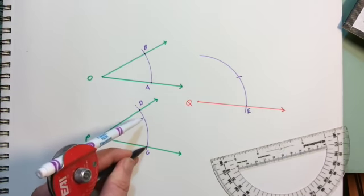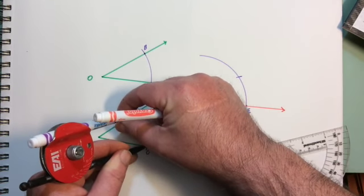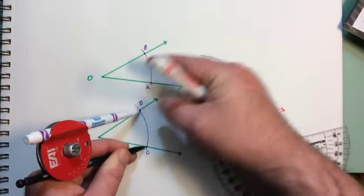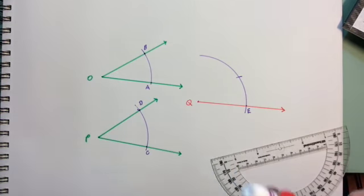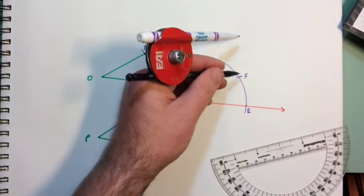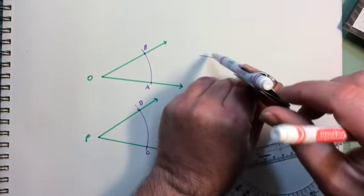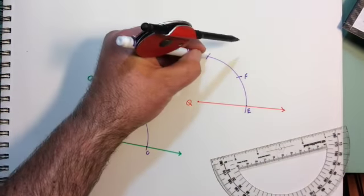Now I am going to set my distance from C to D. This new point would be F. I'm going to place my point on F and make an arc through there. And that would be point G.